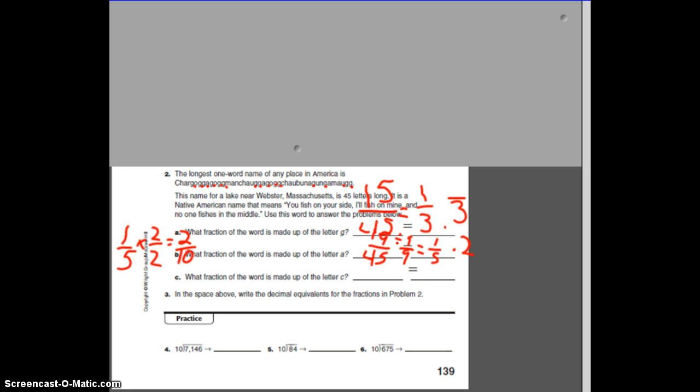Next one, how many of the letters are C? Keep your same denominator, because there's still 45 letters. How many of them are C's this time? 1, 2, 3. I'm counting 3.